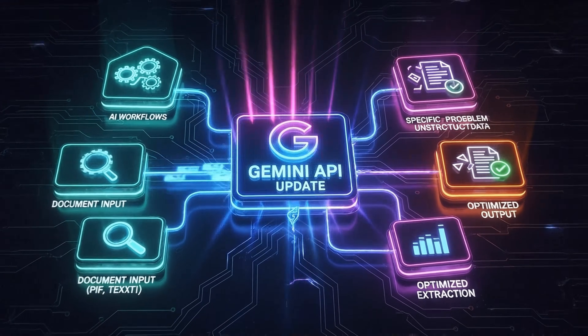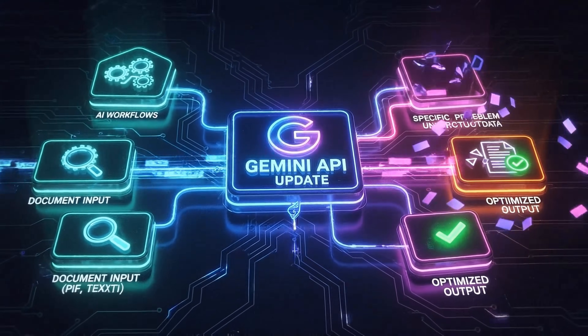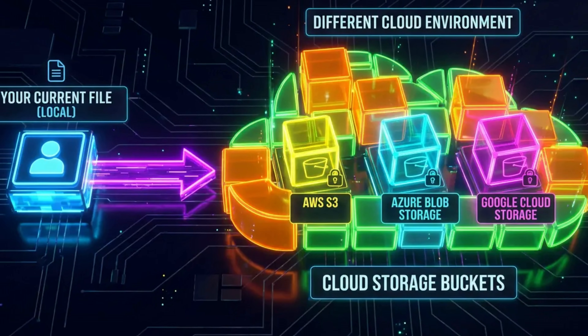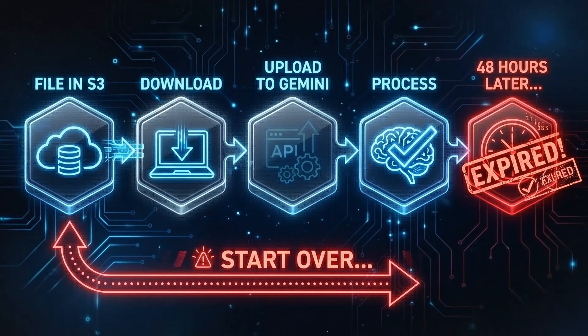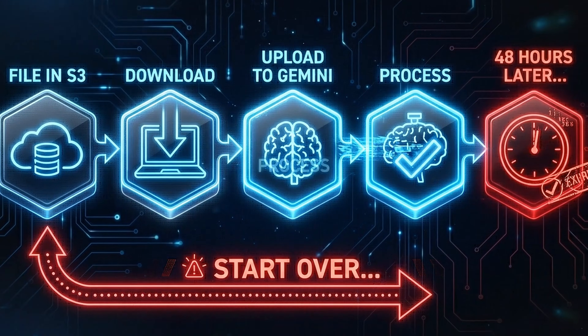The Gemini API recently got updated and it solves a very specific problem when it comes to processing of documents, especially if you're building AI workflows that involve document processing. Let's think of a scenario where your current file lives in a different cloud bucket — it could be AWS, Azure, or even Google Cloud Storage. As of today, if you have to build a workflow, you will have to download the file and then upload it to the Gemini API, and you'll have to do this every 48 hours because that's when Gemini's file storage expires.